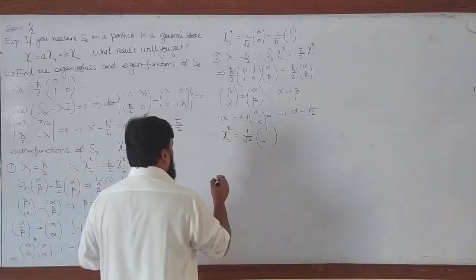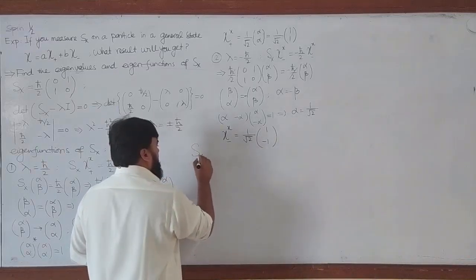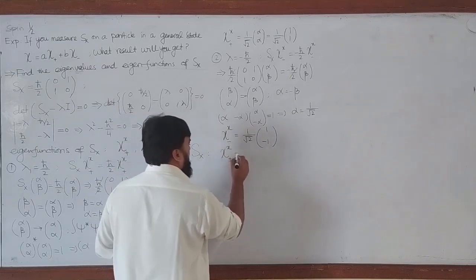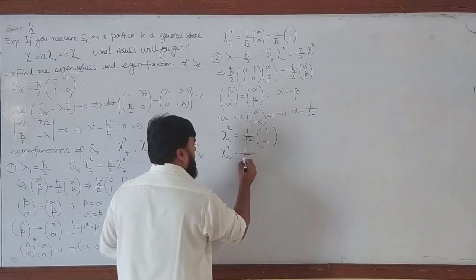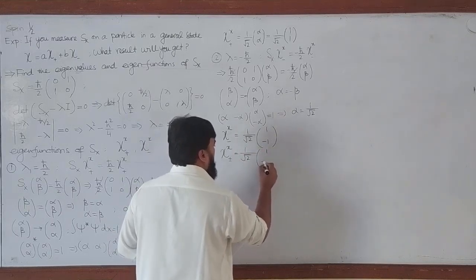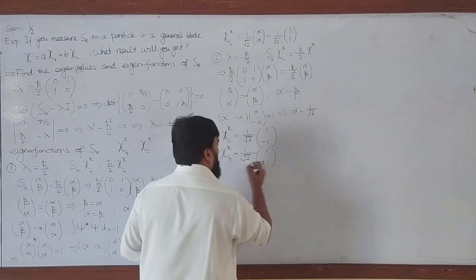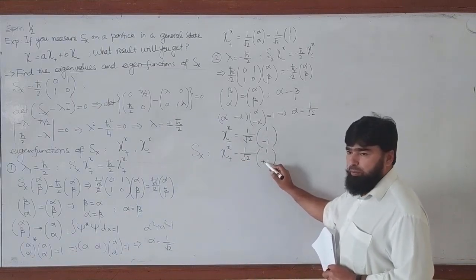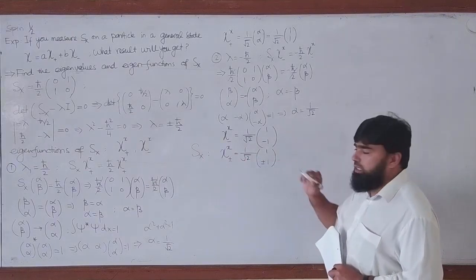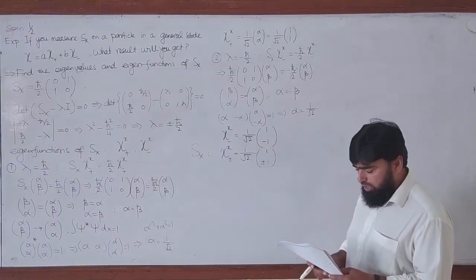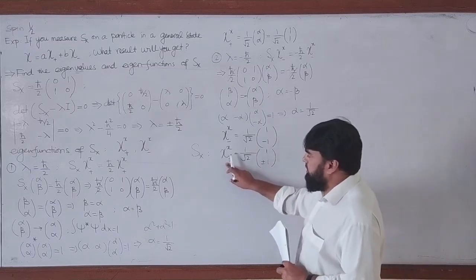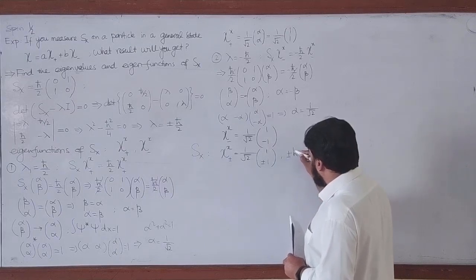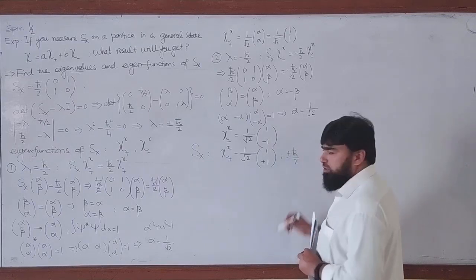We can write the eigenfunctions of Sx in combined form: chi_plus_minus_x equals 1 over √2 times the column vector (1, ±1). When it is plus, the second entry is +1; when it is minus, the second entry is -1. These are the eigenfunctions of Sx with eigenvalues ±ℏ/2.